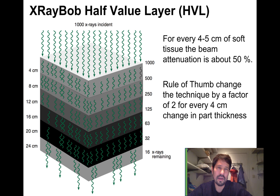Some rules of thumb are for every four to five centimeters of soft tissue, we're cutting the beam in about half. So if I had a technique for a 20 centimeter abdomen, and then a patient come in who was a 25 centimeter abdomen, I would need to double my mass. Our rule of thumb is we change our technique by a factor of two for every four centimeters increase in part thickness.